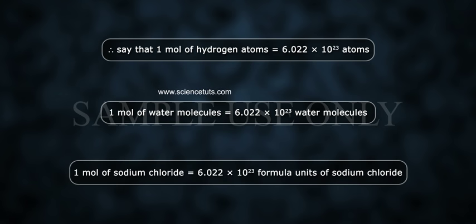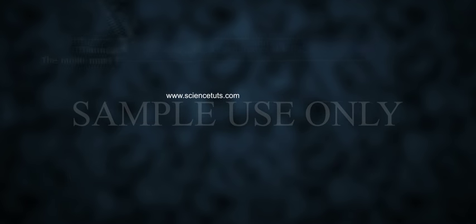One mole of sodium chloride equals to 6.022 into 10 to the power of 23 units of sodium chloride. The mass of one mole of a substance in grams is called its molar mass.